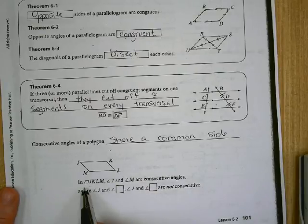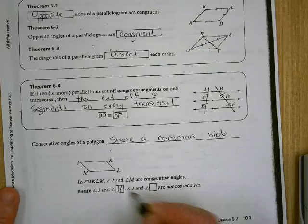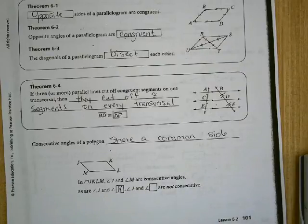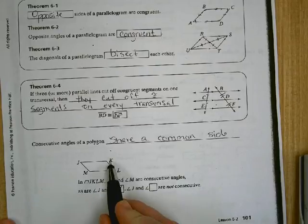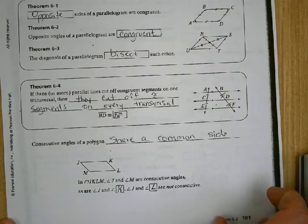In this parallelogram, angle J and angle M are consecutive, as are J and K. And which one is J not consecutive with? If it's consecutive with K and it's consecutive with M, then it's not consecutive with L. They do not share a common side. They're not consecutive.